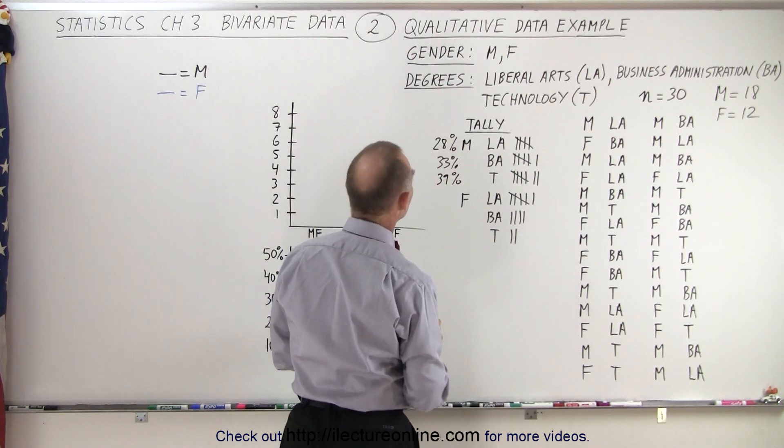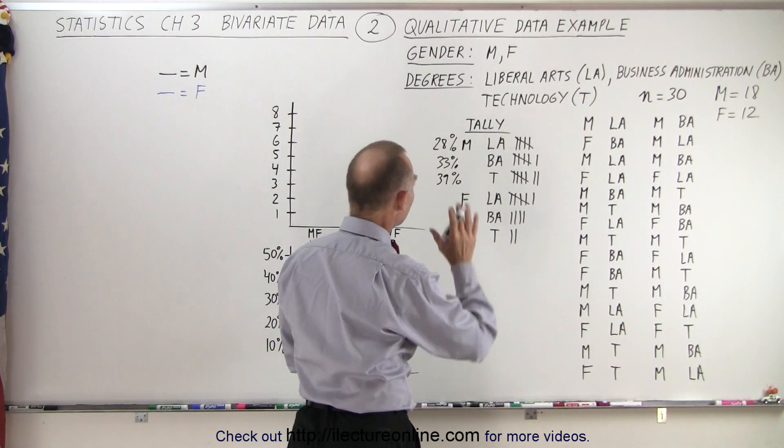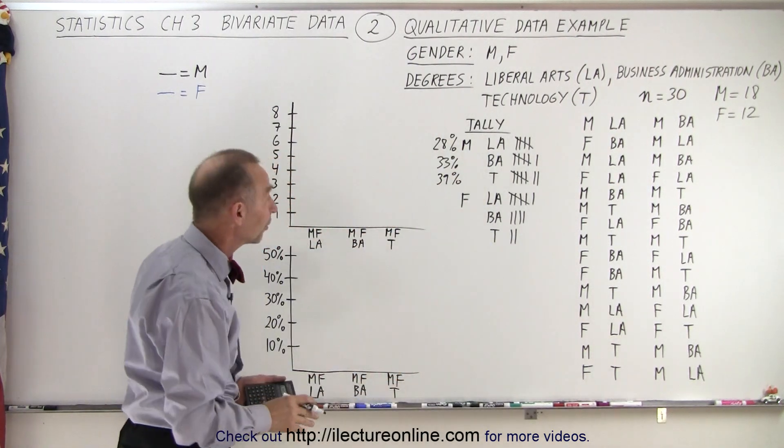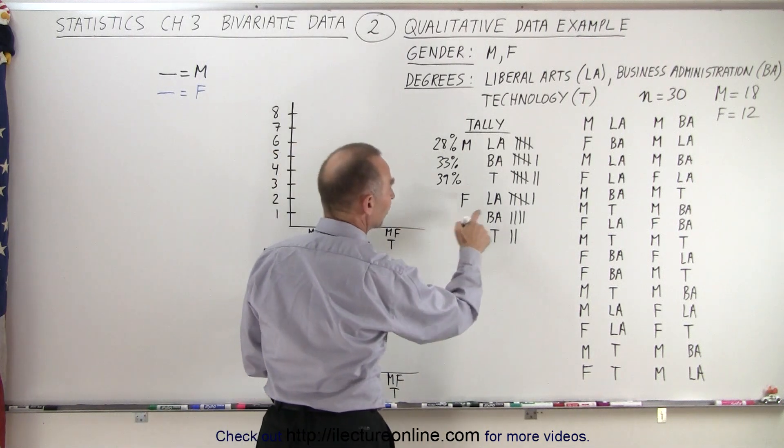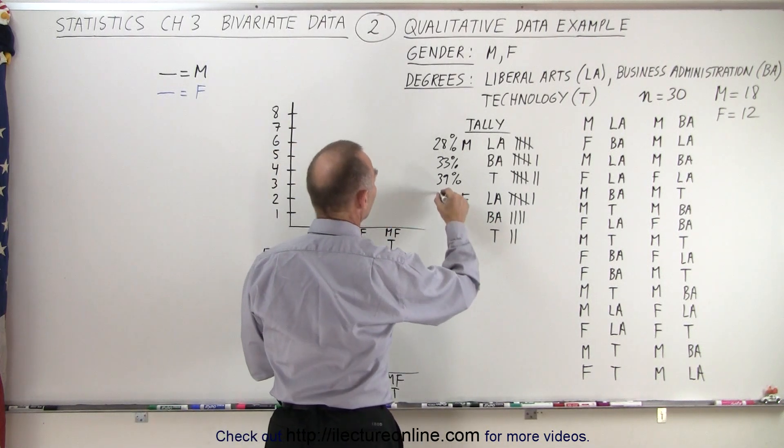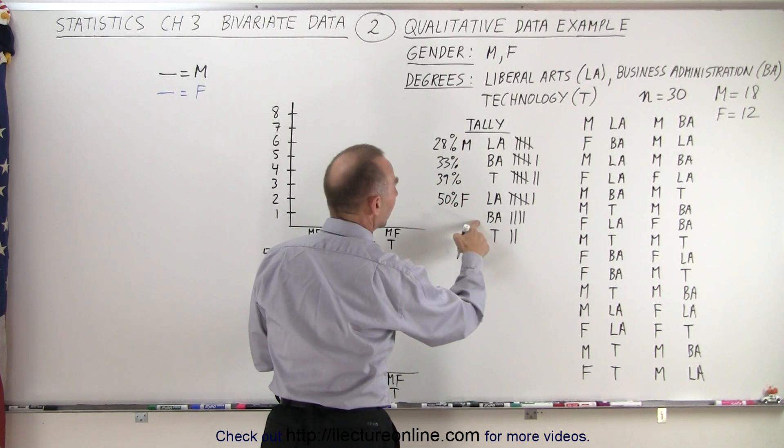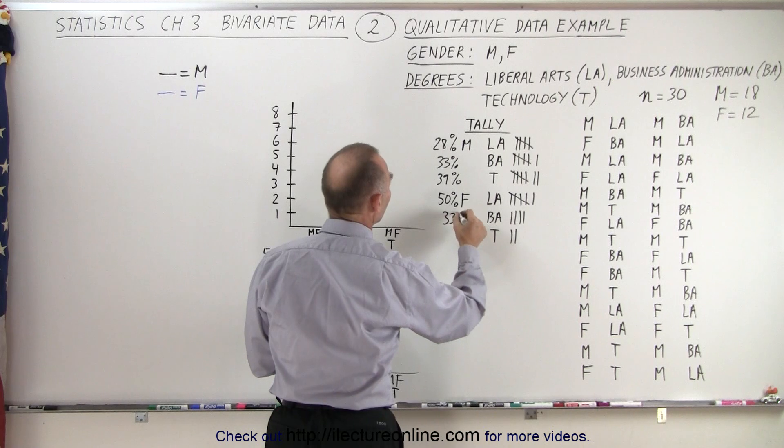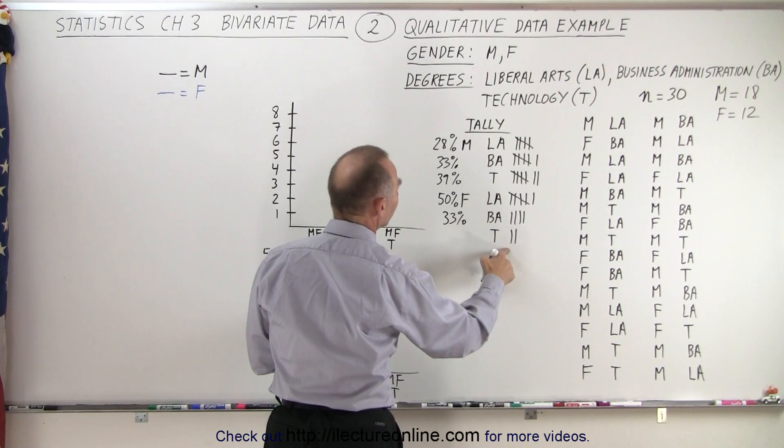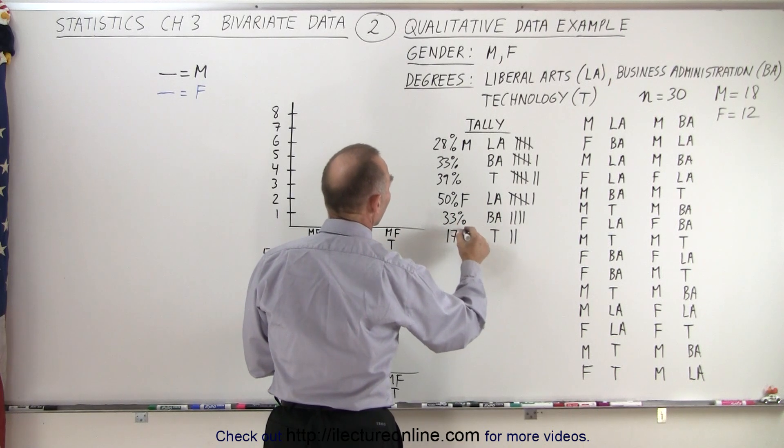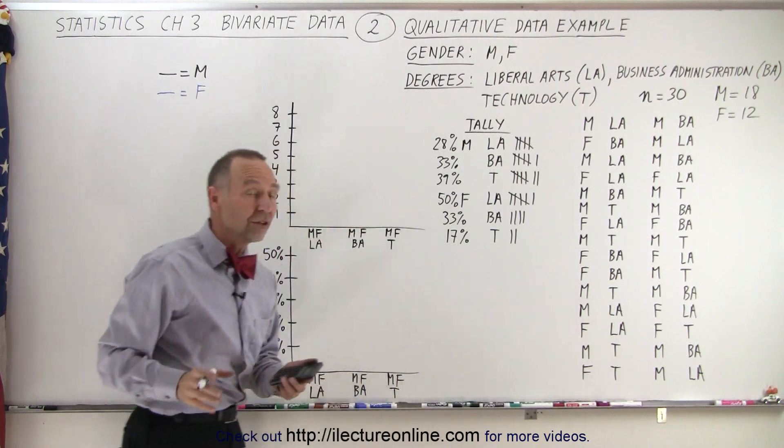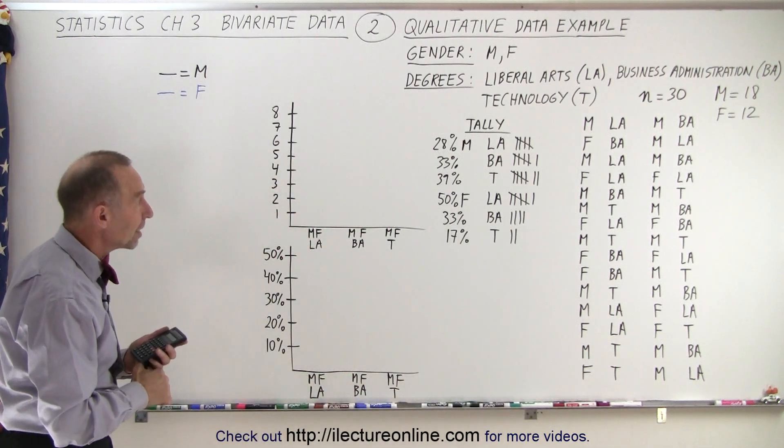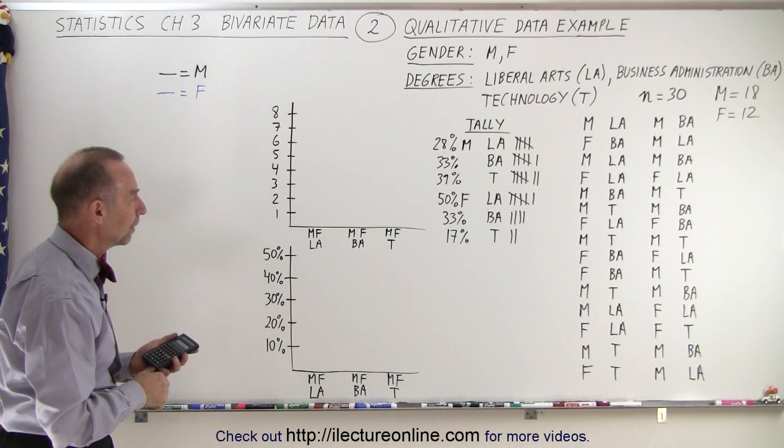And if I add all that together, that's 60, 80, 88... that adds up to 100%. Okay, 4 females out of 6, that's 6 out of 12, that's a full 50% getting Liberal Arts degree. 4 out of 12, that would be a third, 33%. And 2 out of 12, that would be 17%. There we go, in percentage, the number of males and females and what type of degree they will be earning.